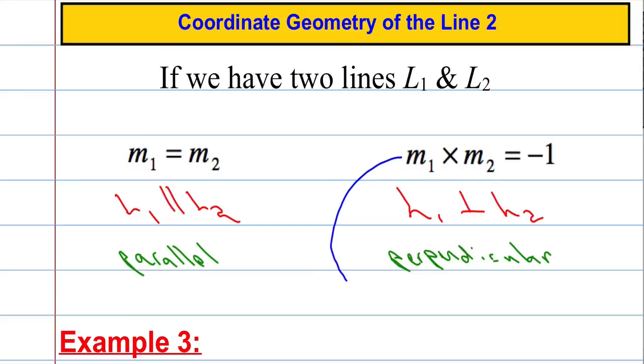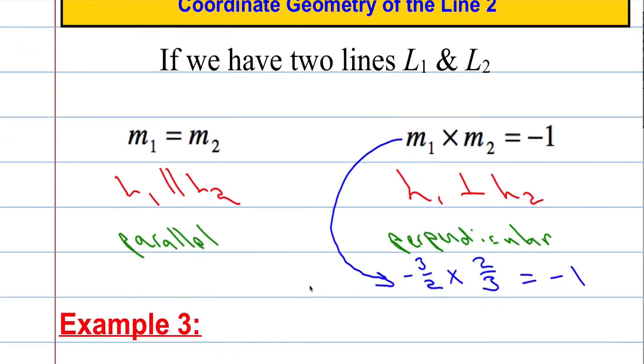So if the gradients are the same, they're parallel. If we multiply the two gradients together and get an answer of negative 1, they're perpendicular. Now essentially what this means, we don't need to do this multiplication thing. Suppose we had a gradient, suppose m₁ was 2, and I wanted a gradient that's perpendicular to it. I need to multiply by the negative reciprocal. In other words, I'm going to flip this upside down and change the sign. So if that's 2 over 1, the perpendicular must be negative 1 over 2. Suppose I had a line with a gradient of negative 3 over 2 and I want a perpendicular one. M₂ must be, I'm going to flip it upside down and change the sign, so it must be 2 over 3. If I multiply these two together we're going to get negative 1. So the shortcut way is the negative reciprocal: flip it upside down, change the sign.